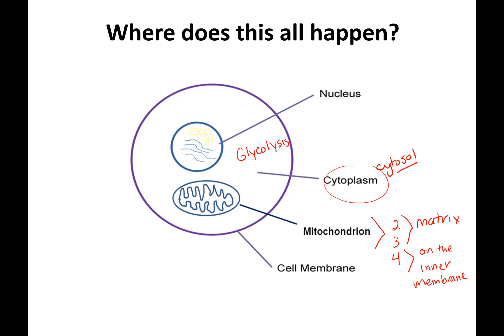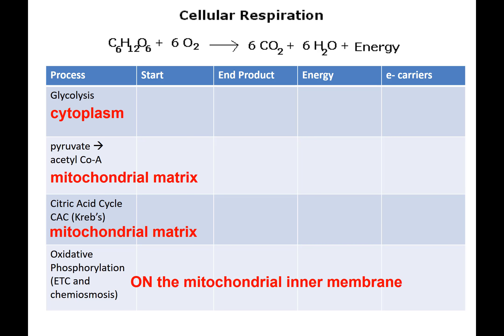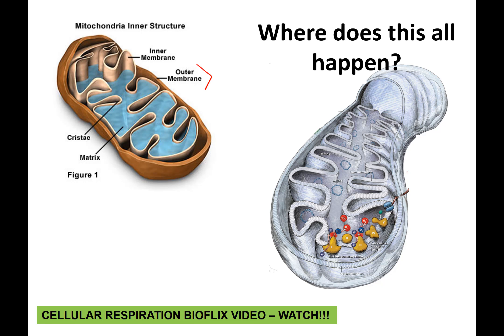Mitochondria is where ATP is made, and now we're learning the process — cellular respiration. Mitochondria have two membranes: an outer membrane and an inner membrane. The outer membrane is thought to be the result of endosymbiosis.